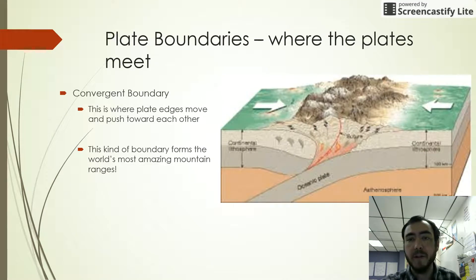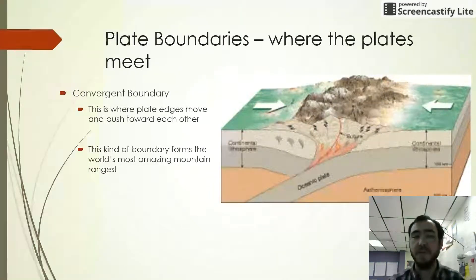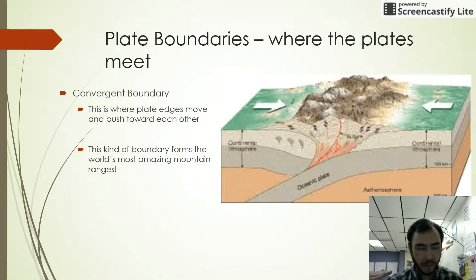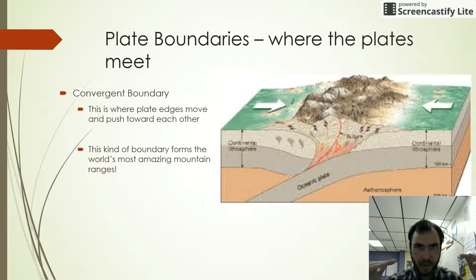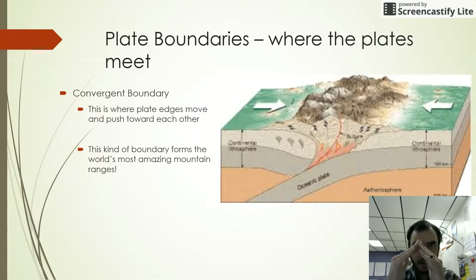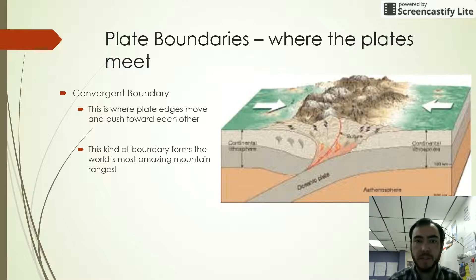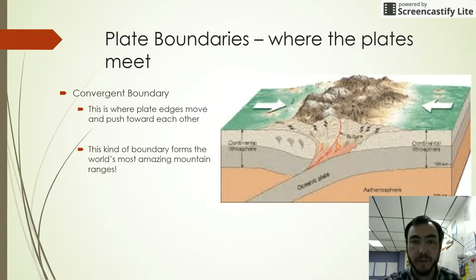At convergent plate boundaries, this is where two plates collide. What naturally happens when two plates collide is that new land is pushed up and formed. This kind of boundary forms the world's most amazing mountain ranges.